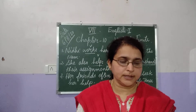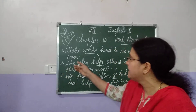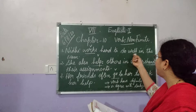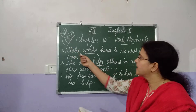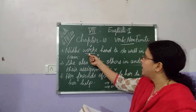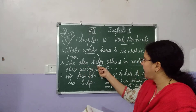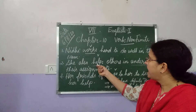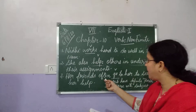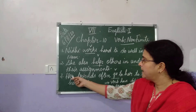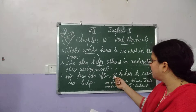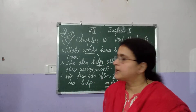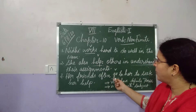Now we can read the given examples from your textbook. The first one: 'Nidhi works hard to do well in the exam.' Here, Nidhi is the subject and the finite verb is 'works.' The next one: 'She also helps others in understanding their assignment.' She is the subject and 'helps' is the finite verb. Third: 'Her friends often go to her to seek her help.' Her friends is the subject and 'go' is the verb.